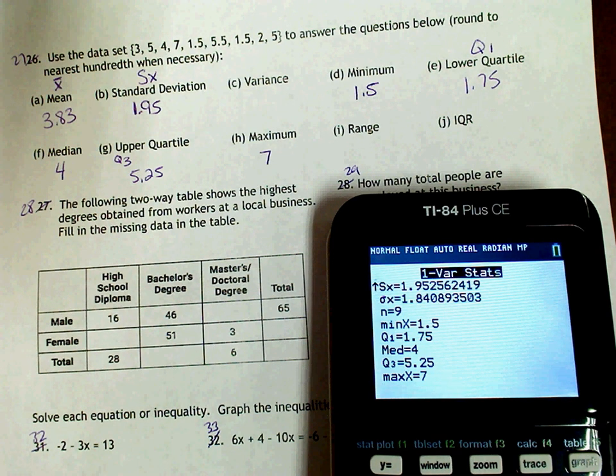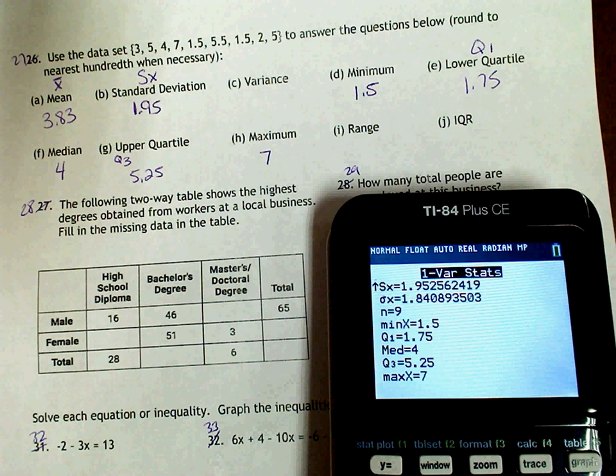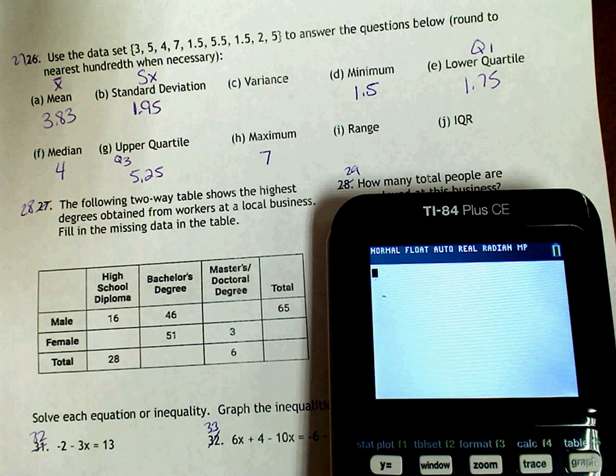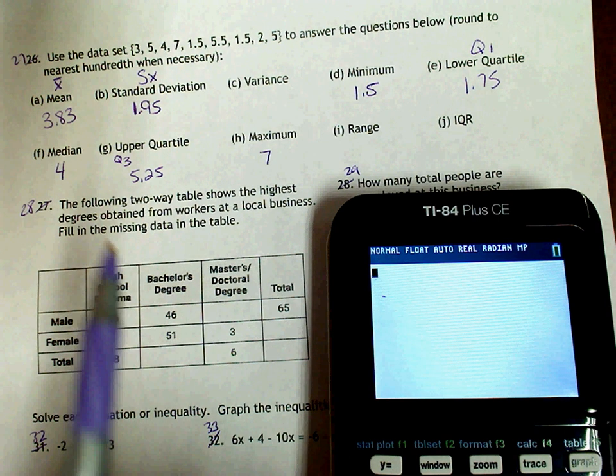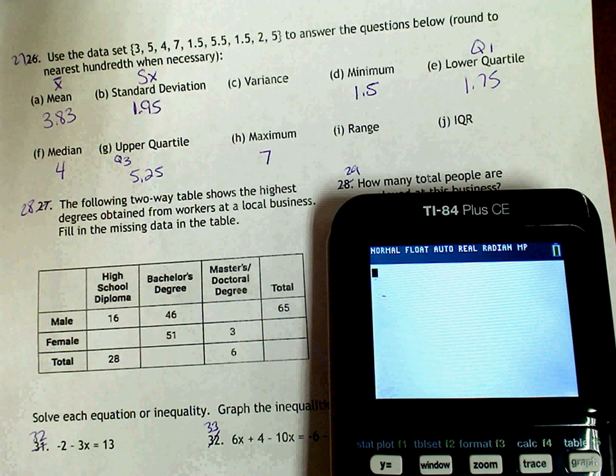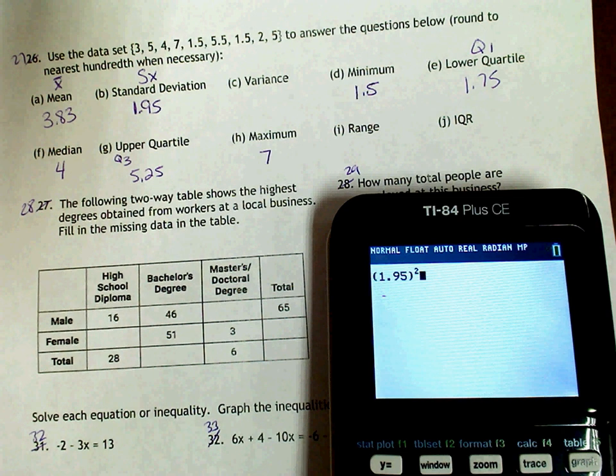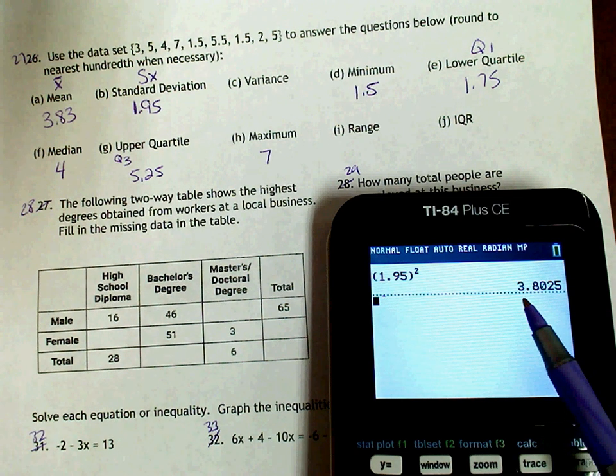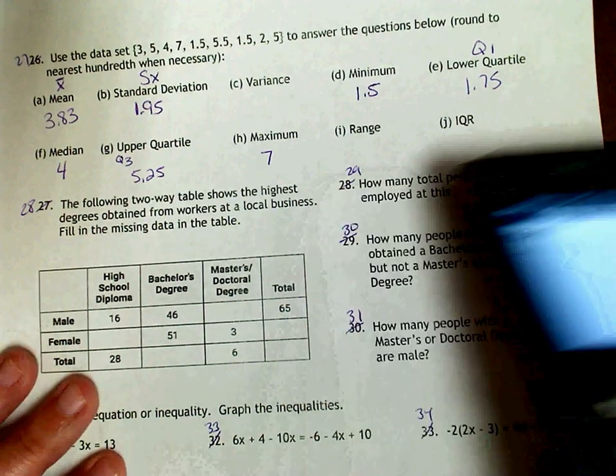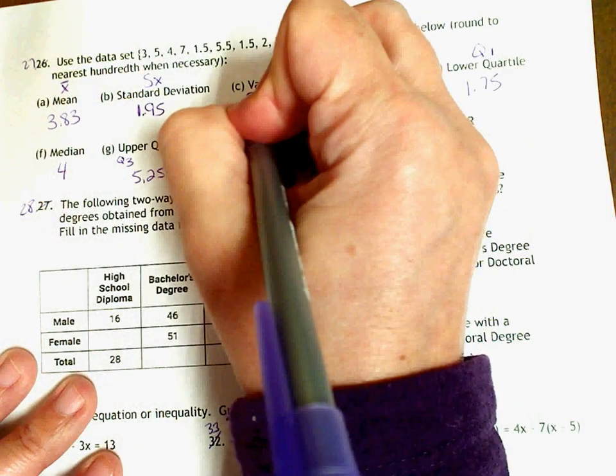Alright, so to calculate the variance, you can do this two ways. You can take the standard deviation that you have, 1.95, and you can square it. So that would be 3.80. So that's one way of doing it. So I'm going to write that down, 3.80.